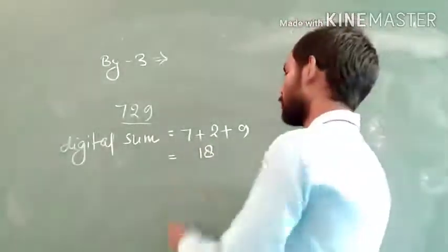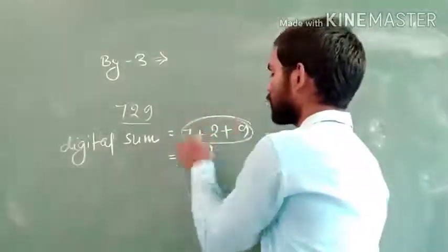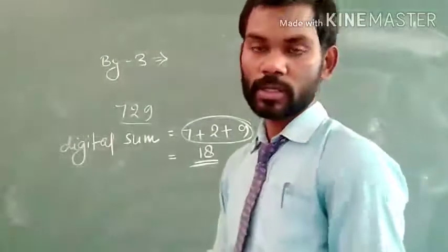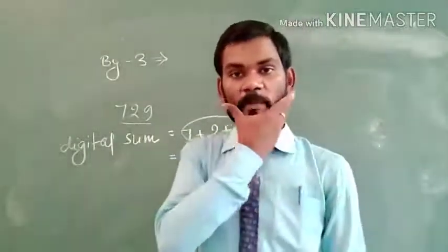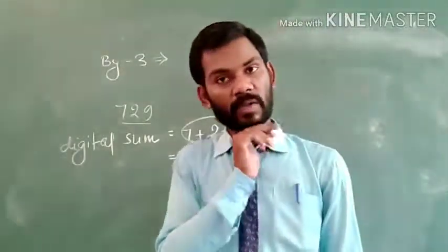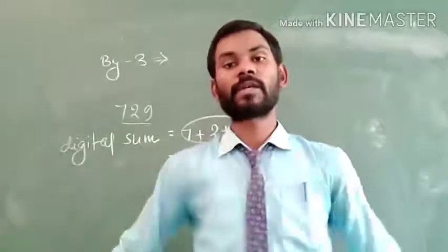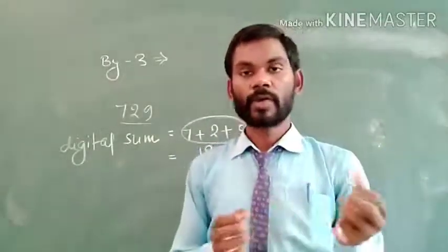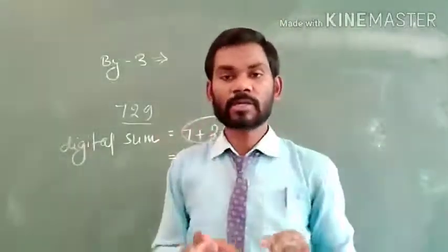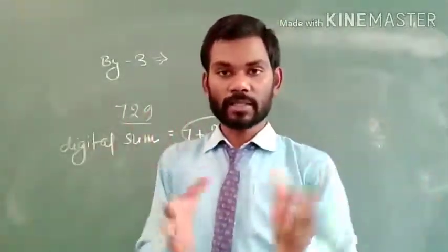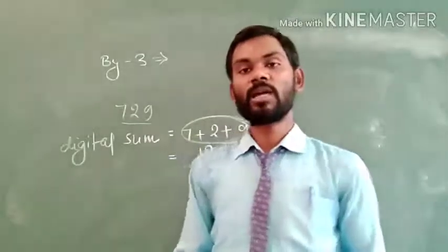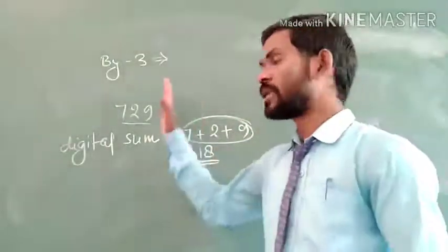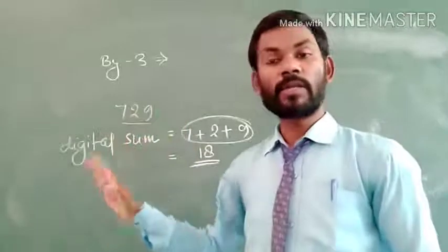Why? Because its digital sum is a multiple of 3. So its rule is: when the digital sum of a number is divisible by 3, or a multiple of 3, then that number is also divisible by 3. I think divisibility by 3 is all clear.